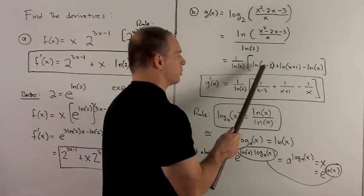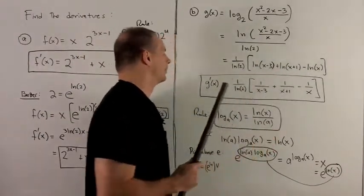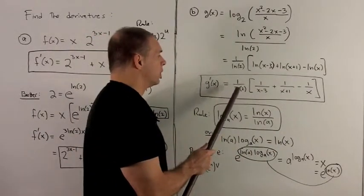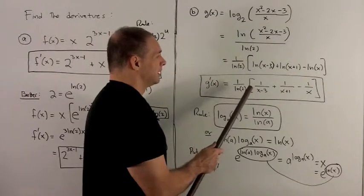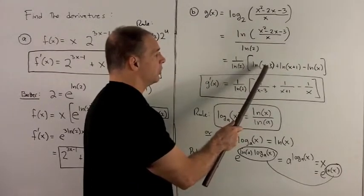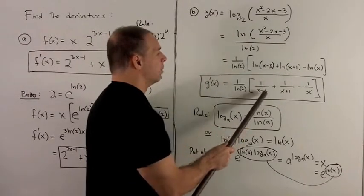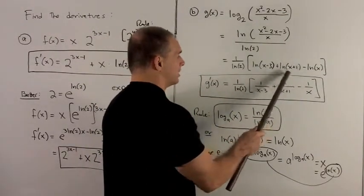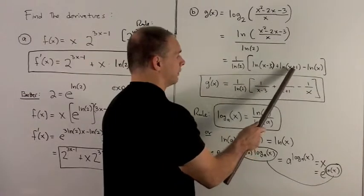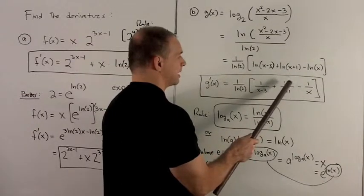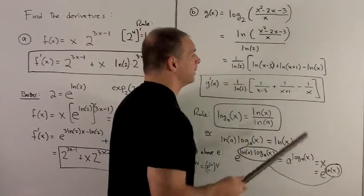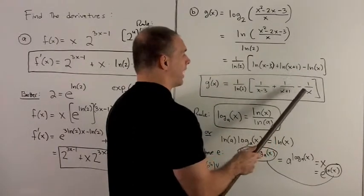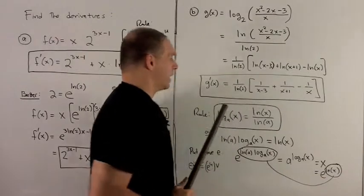So g prime of x equals 1 over natural log of 2. Derivative of this is going to be a chain rule. You take what's on the inside, flip it over. Derivative of the top is 1. Derivative of this, take what's on the inside, flip it over. Derivative of the inside gives me the top, which is 1. For this one, we're just going to take the derivative, which is just 1 over x, and now I have my answer.